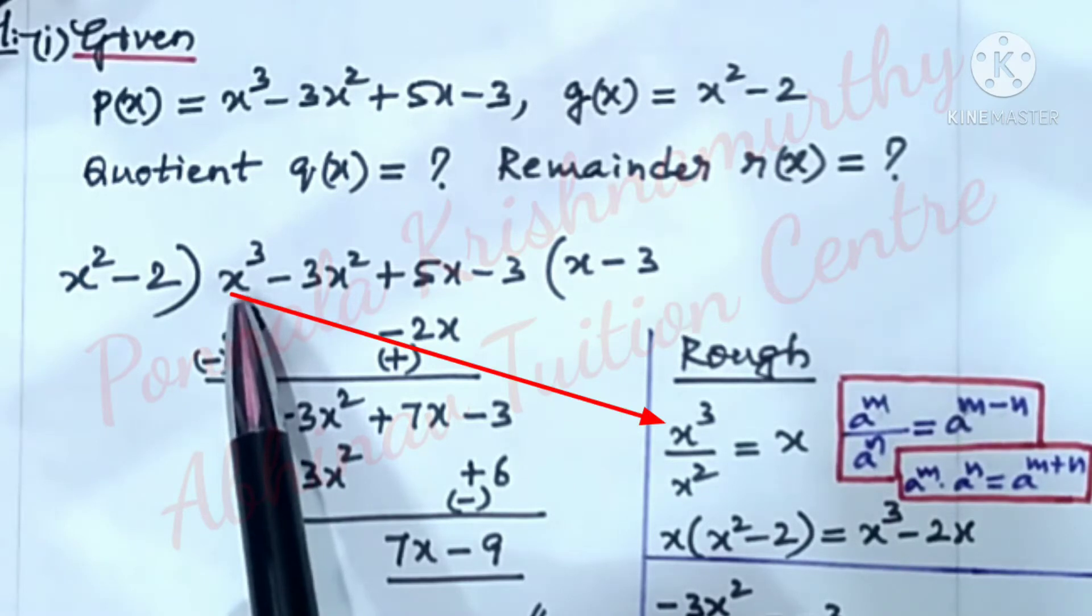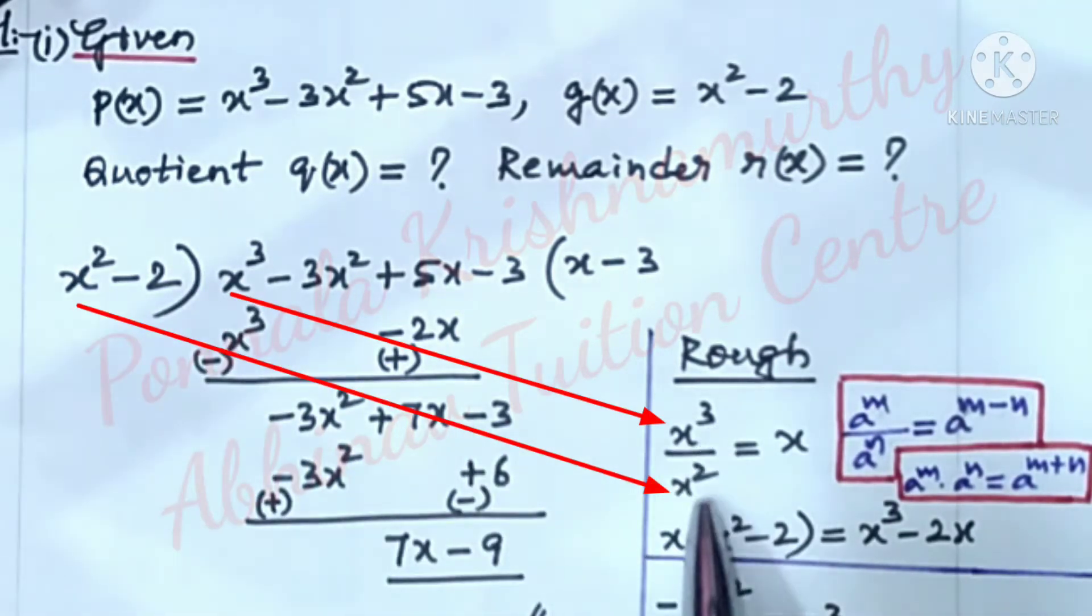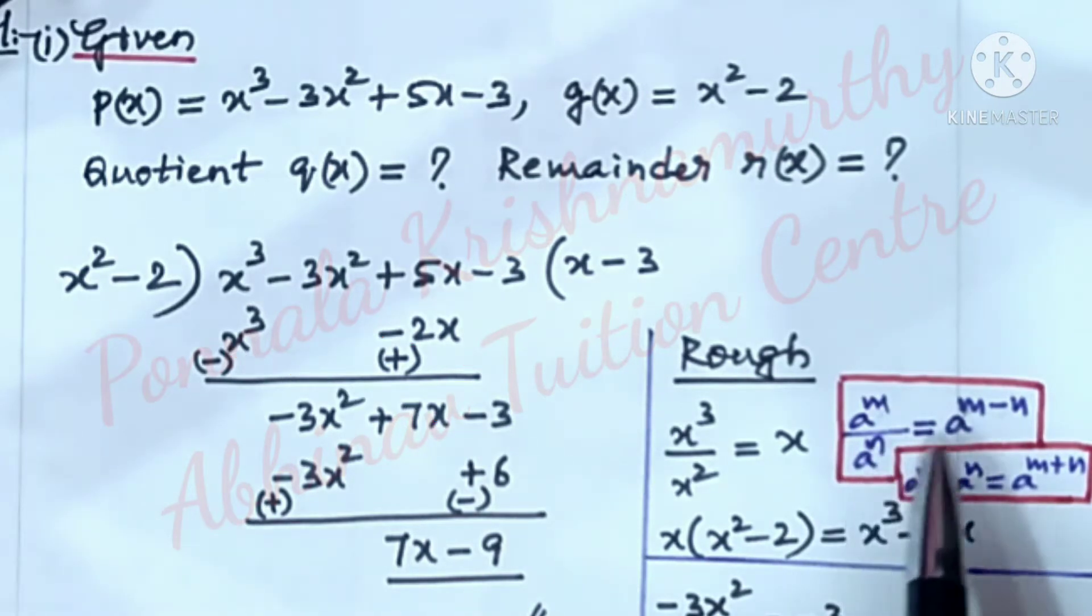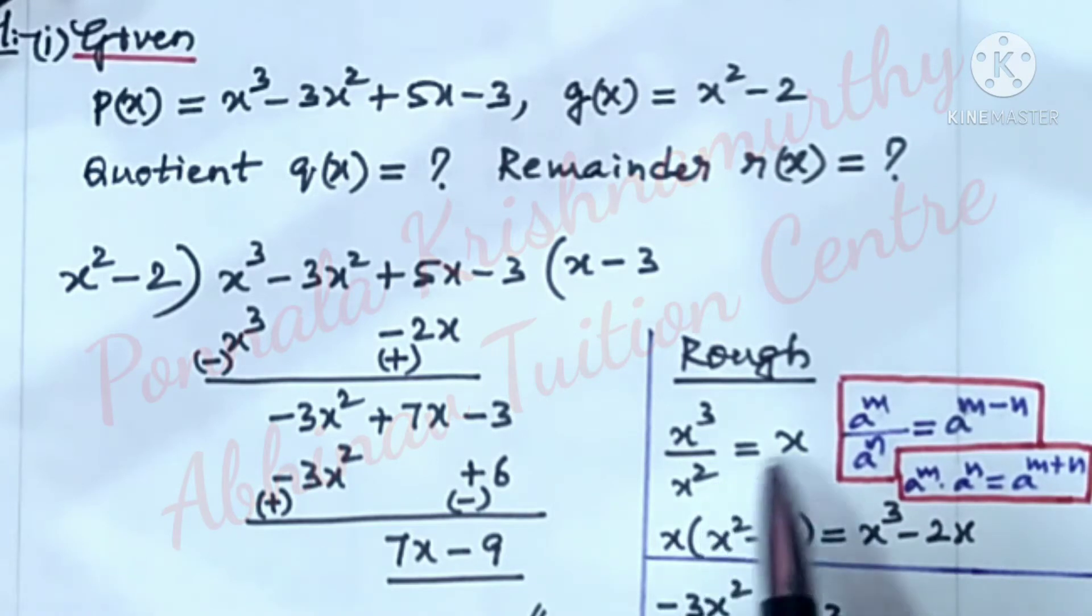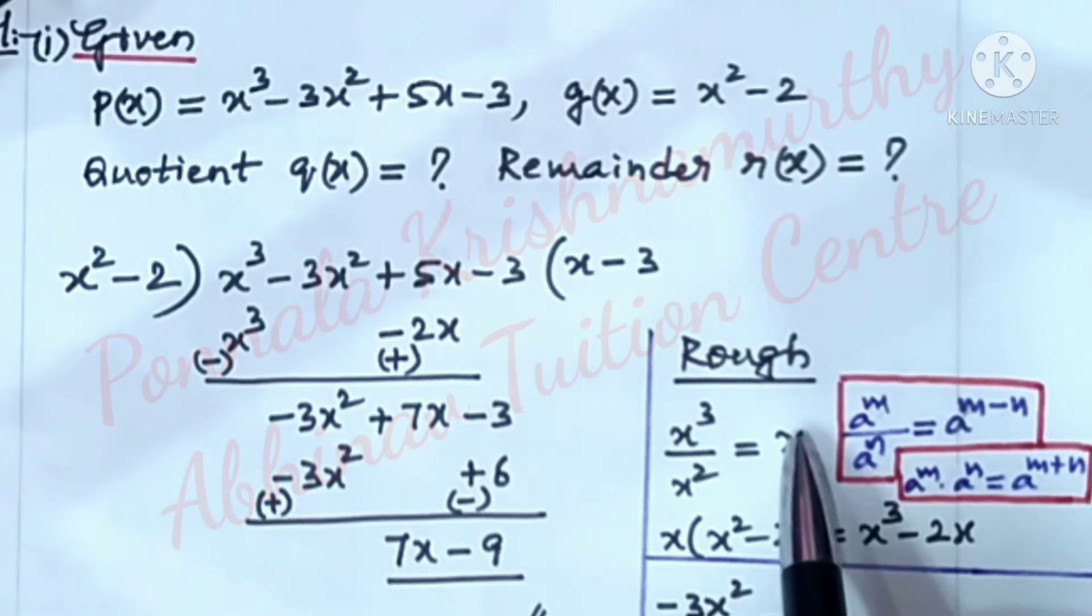Now, this x³ by x² is equal to x. aᵐ by aⁿ is equal to aᵐ⁻ⁿ. So here 3 - 2 is 1. So this is x¹ that is x. This x should be written here.